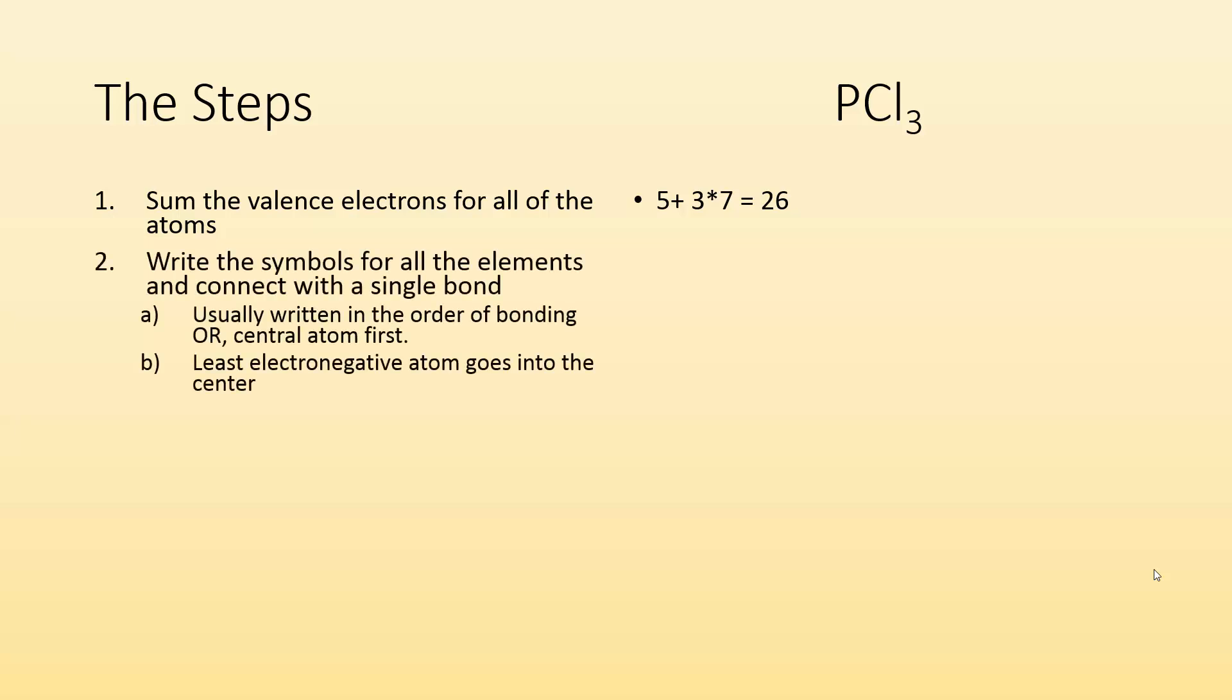Next is to write the symbol for all the elements and connect with a single bond. It's usually written in order of bonding, or the central atom is given first. So if I'm given PCl3, P is going to be that central atom. Another way to think about it is the least electronegative atom tends to be the one that goes in the center. So between phosphorus and chlorine, phosphorus is less electronegative, so we put phosphorus in the middle, we draw the three chlorines, and we connect them all with a single bond. So far, piece of cake.